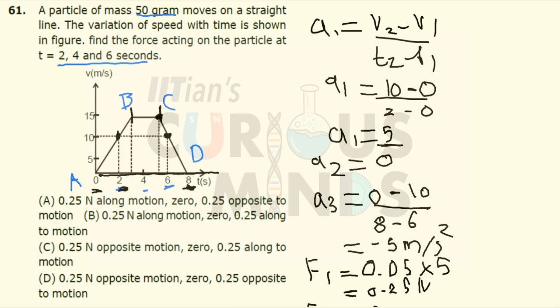Third case is negative 0.25. So if you see, it is option number A. That is 0.25 along the motion, 0, and finally it will be equal to 0.25 opposite to the motion of the body. Thank you.